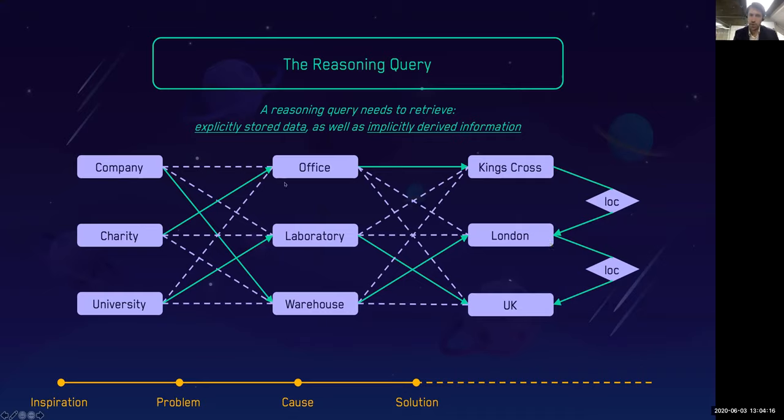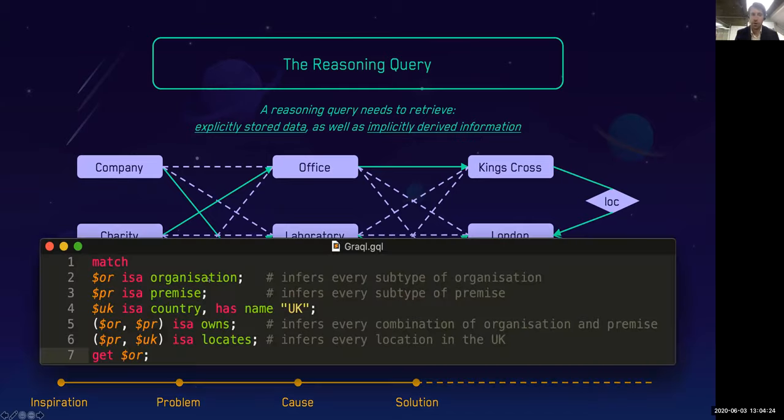Then we've got the notion of an equivalent relation, where we want to say that if the same parents has two different children, we can now infer that those children should be siblings. We can do that which would look like this. To go back to the previous example of this reasoning query, where we want to be able to retrieve explicitly stored data but also implicitly derived information. To write this query, if we have a model that allows us to query for any organization, we would be able to infer all those three subtypes.